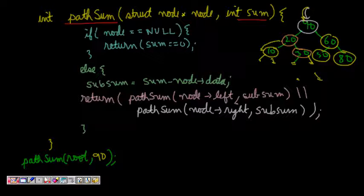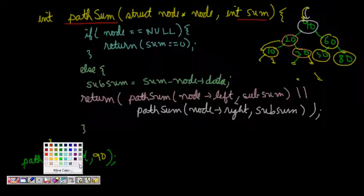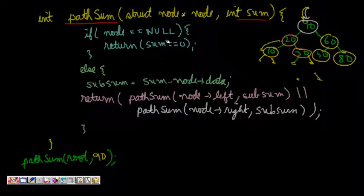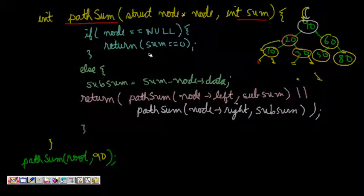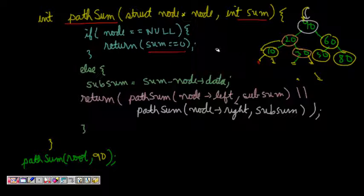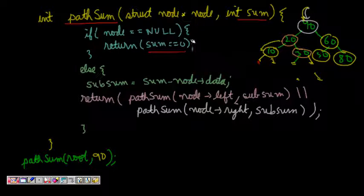Let's understand the code. If node is null and sum is 0, I have already collected everything, so I return 1. But if sum is not equal to 0 — either negative (exceeded) or positive (not yet reached) — then we do not return 1. This is the base case.